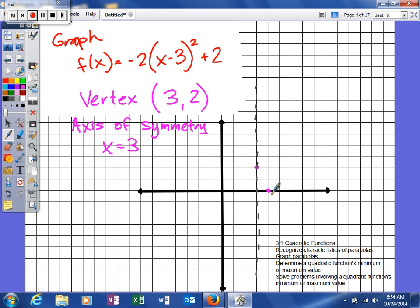Now the nice thing about graphing parabolas is once you find one point, you know there's immediately another point. So if I go right 1, down 2, if I go left 1, I also go down 2. And that's the role of the axis of symmetry. It basically cuts your graph into equal parts.